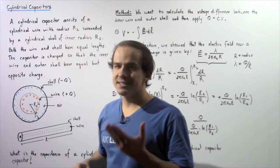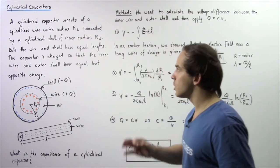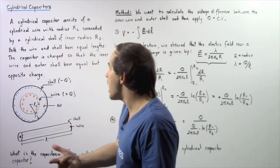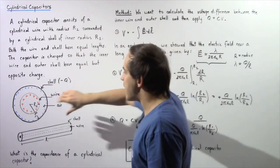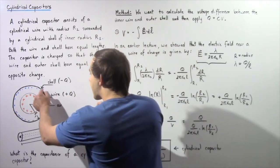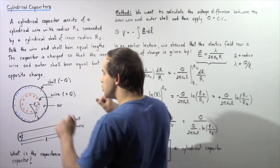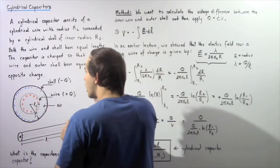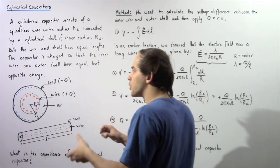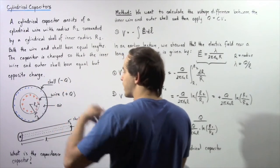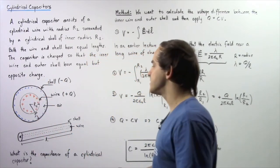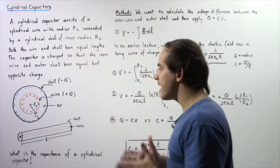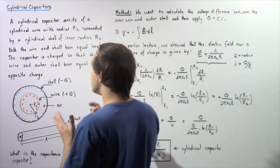A cylindrical capacitor consists of an inner solid cylindrical wire with a radius given by R2, surrounded by a cylindrical outer shell of inner radius R1, as shown in the diagram. This is our inner solid wire of radius R2 and this is our outer cylindrical shell that has an inner radius given by R1. Notice that this outer shell has a certain thickness to it, so it has an inner radius and an outer radius. In the space between our inner and outer shell, we have air and that air acts to insulate our electric charge.